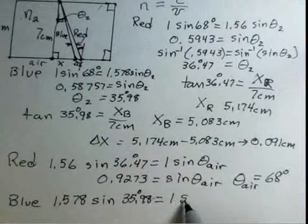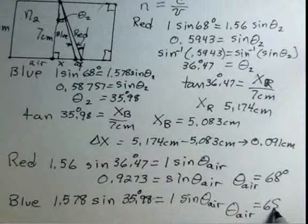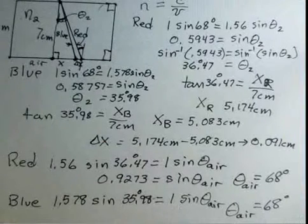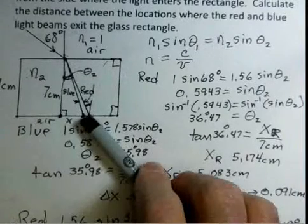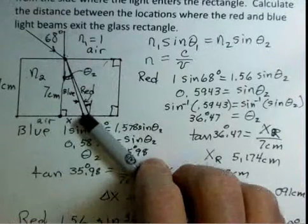So, sine of theta in the air for the blue light. And if you work this out again, you'll get 68 degrees. So, these two beams of light, they have the same direction as the incoming beam. It comes in 68 degrees away from the normal. And the light leaves this rectangle 68 degrees away from the normal.